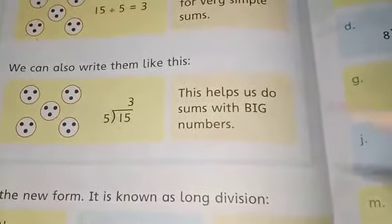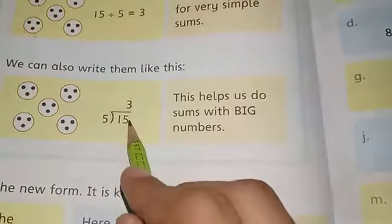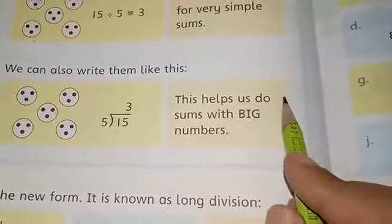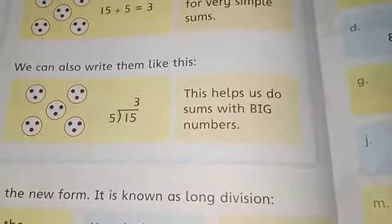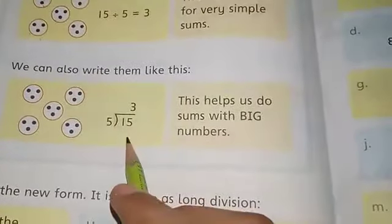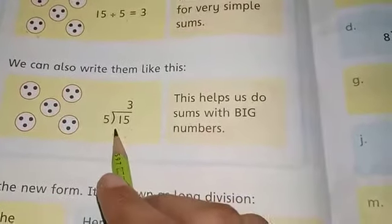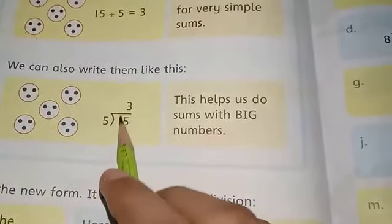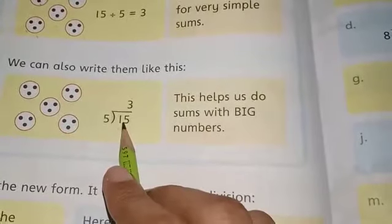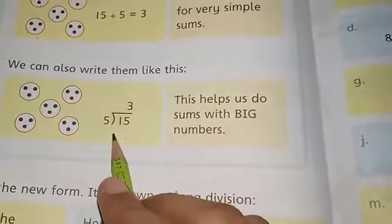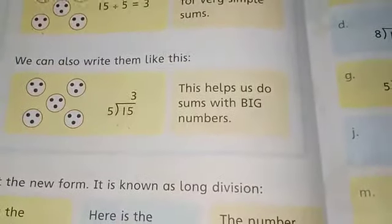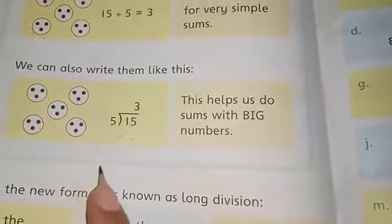This helps us to do sums with big numbers. This method helps us solve big numbers also. Fifteen you will keep inside, five you will keep outside, read the table—five threes are fifteen—and three you will write on top.